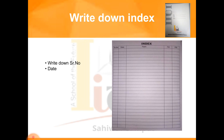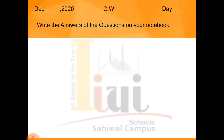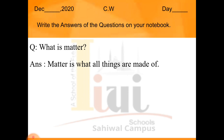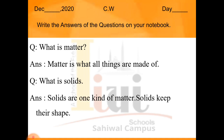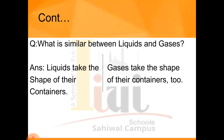Students, now write down the index before starting your work. Write the serial number, date, and topic — that is 'Matter and Mixtures, Lesson Number 1.' Now write the date and day in the given format and write the answers to these questions in your notebook. Question 1: What is matter? Matter is what all things are made of. Question 2: What is a solid? Solids are one kind of matter and solids keep their shape. Question 3: What is similar between liquids and gases? Liquids take the shape of their container, and gases also take the shape of their container.